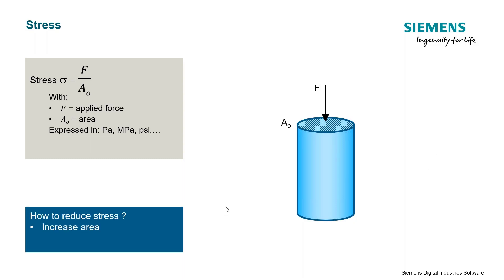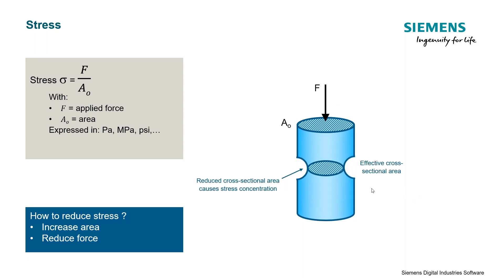If we talk about how to reduce the stress on a part, there are two knobs we can turn: we can either increase the area that the load is being applied over, or we can reduce that load. Alternatively, if we have a reduced cross-sectional area — such as a notch or a hole in the part — we typically get stress concentrations at those areas. That is part of the reason why parts typically fail at holes and notches.